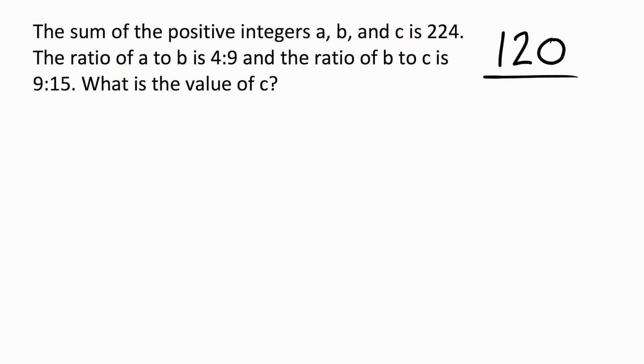We have a total of 224. We have two different ratios. A to B is 4 to 9, and B to C is 9 to 15. Most importantly, let's see right here, we have a 9 and a 9. On the SHSAT there will always be a problem like this, and this middle number will always be the same, which means you can combine the two different ratios.